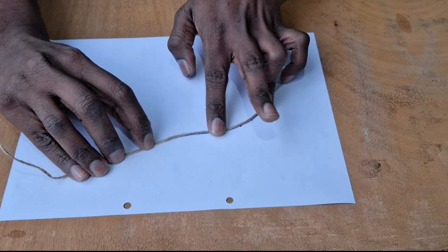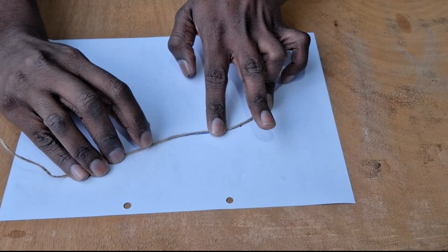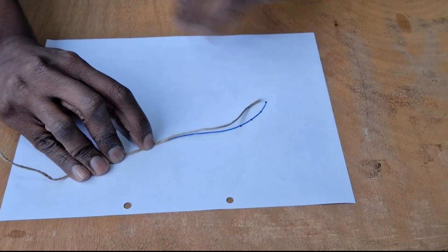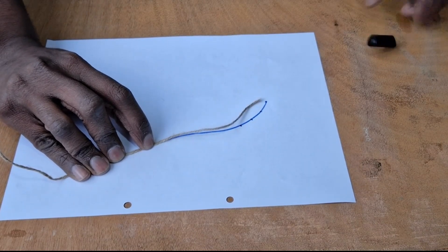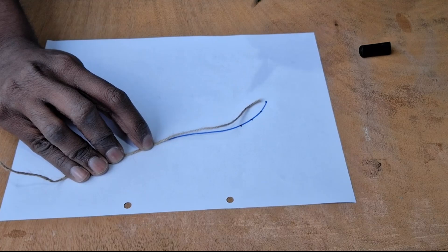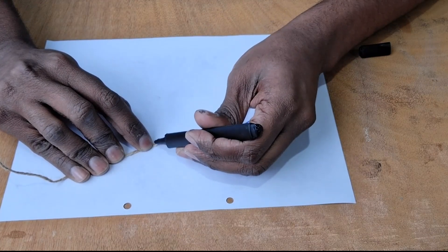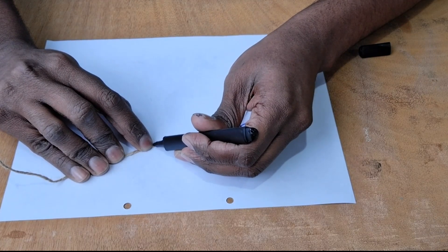And once you've done that, you can place a finger at the end of the line and then use a marker or a pen to mark that point on the thread. Once you've done that, you're done.